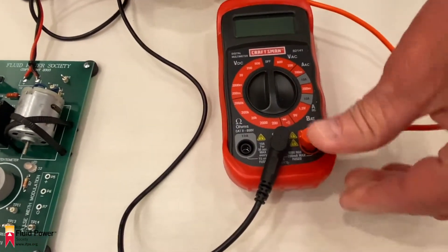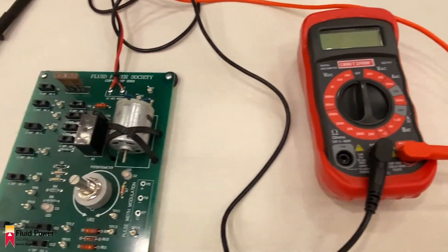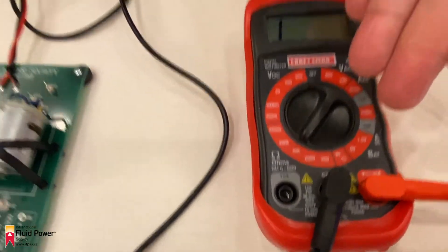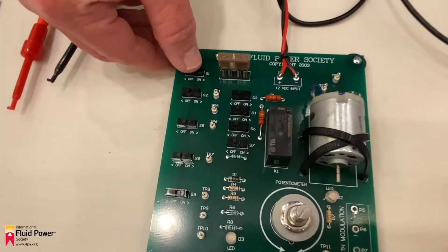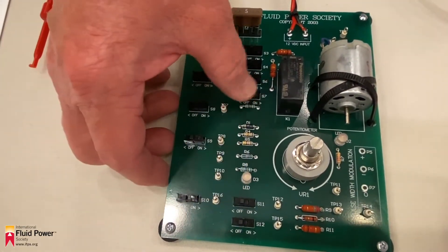Plug the red lead into the volt omega milliamp port of the meter. Set the meter to read mid-range of the ohm scale. Make sure the power source is turned off and that all switches are open, that is, turned off.